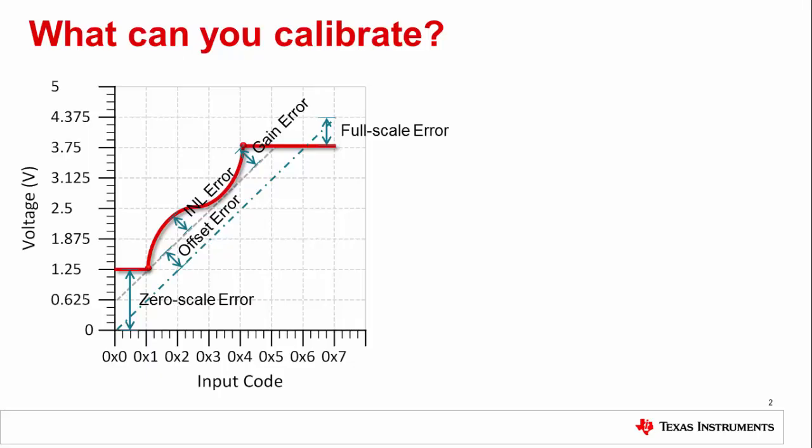Before we talk about what we can calibrate, let's first look at what errors we cannot calibrate. The first is full-scale error because it is a localized endpoint error that doesn't affect the entire transfer function. For the same reason, zero-scale error cannot be calibrated.